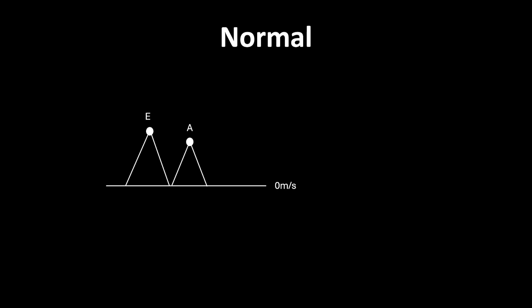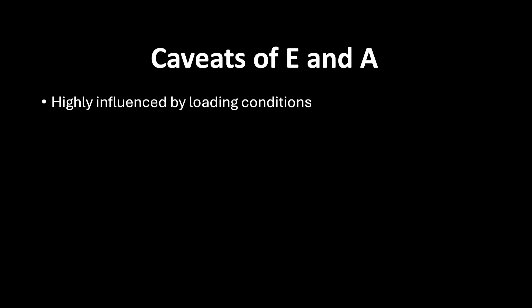E over A describes the ratio between the E and A waves. Normally the E-wave should be slightly bigger than the A-wave; however, normal aging is associated with impaired LV relaxation, so in the elderly the E-wave might be slightly smaller. As a result, the normal E over A ratio is between 0.8 and 2. Increasing LV preload — for example giving a fluid bolus to a healthy person — increases E-wave peak velocity much more than it affects the A-wave, so changes in loading conditions can alter the E to A relationship.